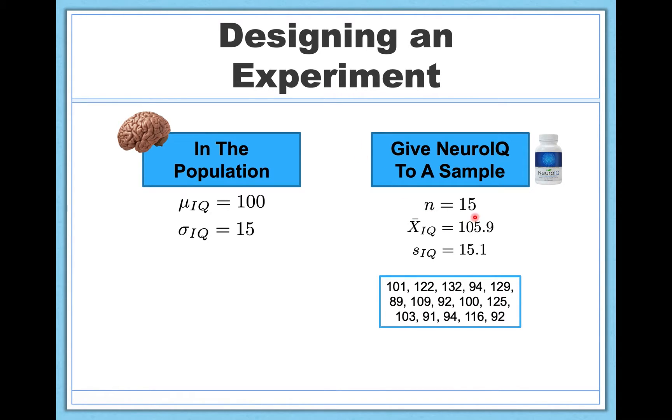So N, my sample size, is 15. Here's their actual IQ scores of all 15 people at the end of the 30-day period of taking NeuroIQ. And here's my sample statistics. So x-bar, my sample mean, is 105.9, and my standard deviation of the sample is 15.1. So you can see there's a 5.9-point difference in this sample's IQ from the population's IQ. But the question is, is this difference of 5.9 points meaningful? Is it enough for me to be convinced that NeuroIQ is actually effective in changing people's IQ scores?